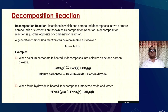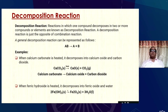What are decomposition reactions? Reactions in which one compound decomposes into two or more compounds or elements are known as decomposition reactions. Decomposition is the opposite of combination. A general decomposition reaction: AB (on heating) → A + B. When calcium carbonate is heated, it decomposes into calcium oxide and carbon dioxide. When ferric hydroxide is heated, it decomposes into ferric oxide and water. These are examples of decomposition reactions.